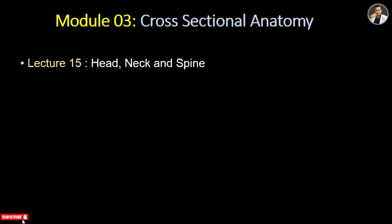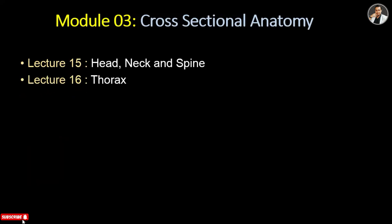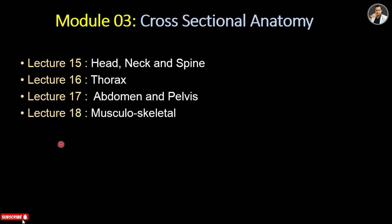Now let's move to Module 3 — cross-sectional anatomy. We will learn about anatomy and CT anatomy. In Lecture 15, we will learn about head, neck, and spine anatomy on CT scan images. In Lecture 16, we will learn about thorax or chest anatomy. In Lecture 17, abdomen and pelvis anatomy. And in Lecture 18, musculoskeletal anatomy — we will cover musculoskeletal anatomy in CT images.